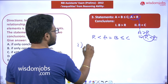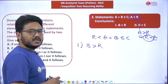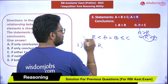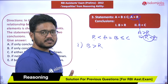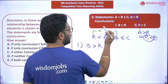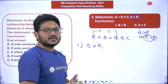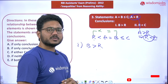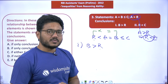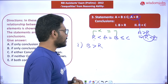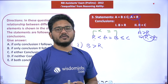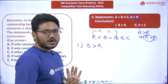The first conclusion is B > R. We check this by locating both elements in the merged statement: B is here and R is here. We identify the symbols between B and R — which are 'less than' and 'equal to'. A relationship can be established, but we need to determine which symbol to prioritize. As covered in previous videos, the basics of prioritization apply here.